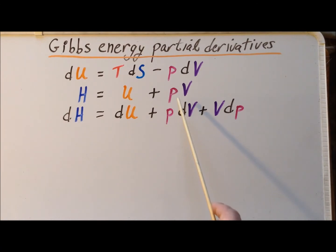And then we have to use the product rule so that we have P times the differential of V plus V times the differential of P to get this expression for the differential of the enthalpy H.